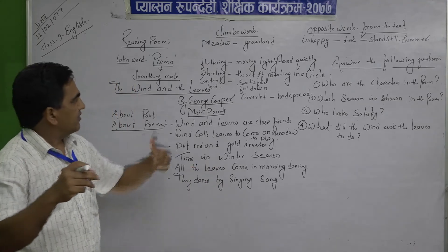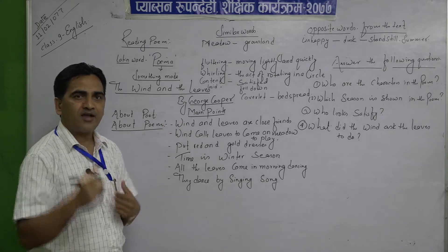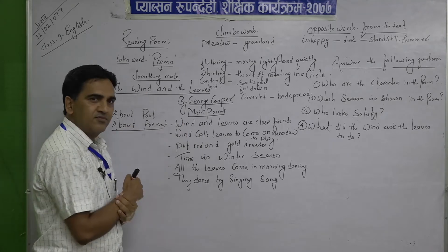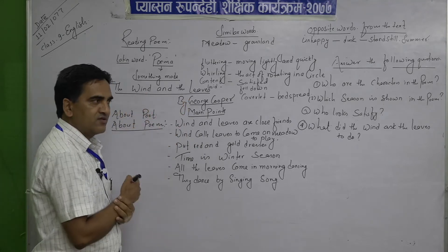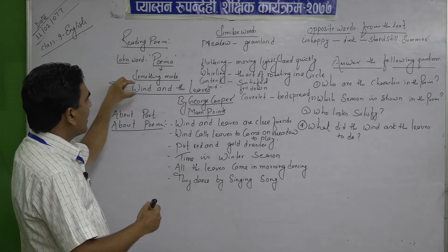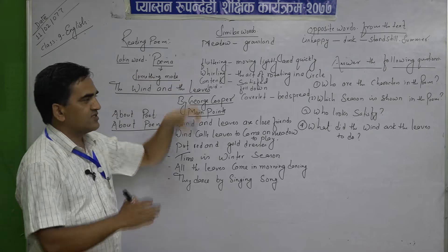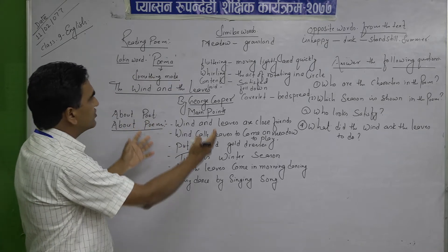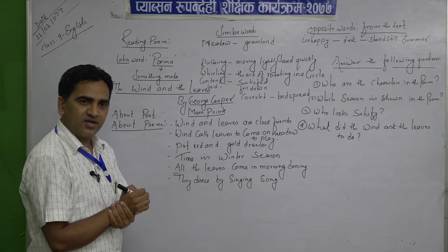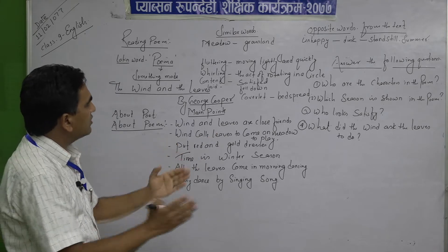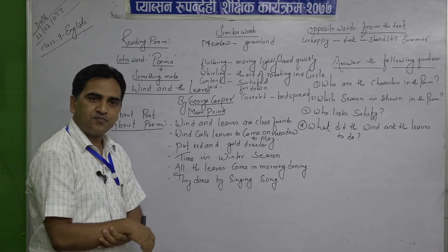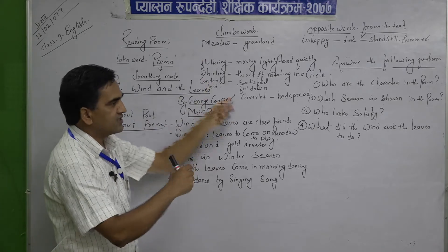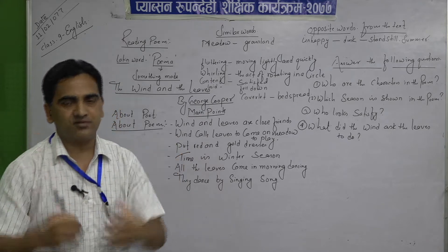In this poem we find two characters. Let me introduce this poem, 'Wind and the Leaves.' Wind is one character and leaves are another character. Before going to the text, you must understand some of the words used in the text, which are very important.